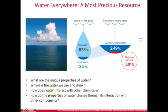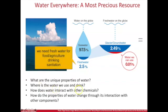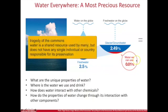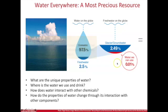There's a scarcity of fresh water for food, agriculture, drinking water, and sanitation. Fresh water can also easily become polluted, so we'll talk about how water interacts with other chemicals. Even where we have access to fresh water, water pollution is similar to air pollution in that it's a tragedy of the commons — a shared resource that no one individual is responsible for, and it can easily become spoiled.